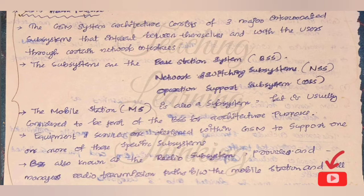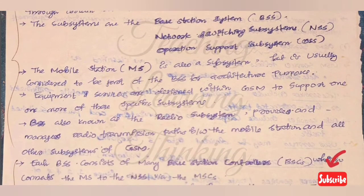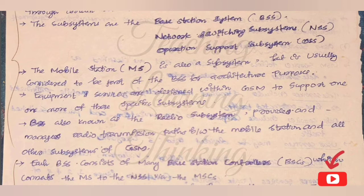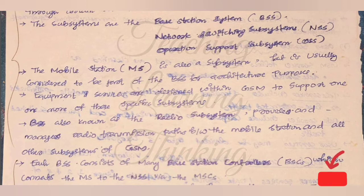The BSS is also known as the radio subsystem. The BSS provides and manages radio transmission paths between the mobile station and all other subsystems of GSM.